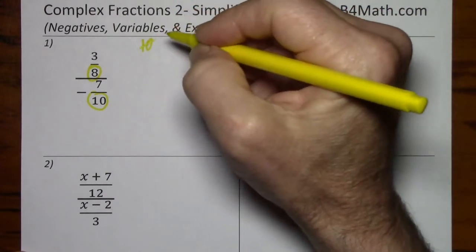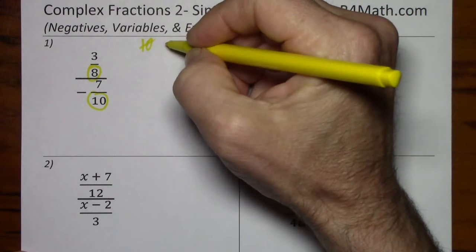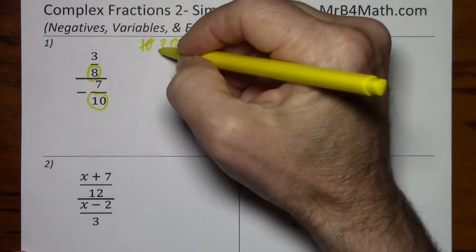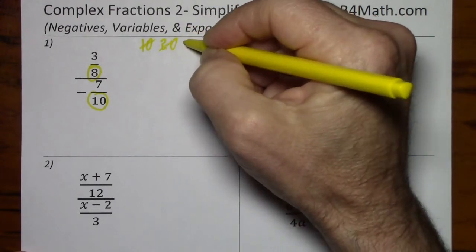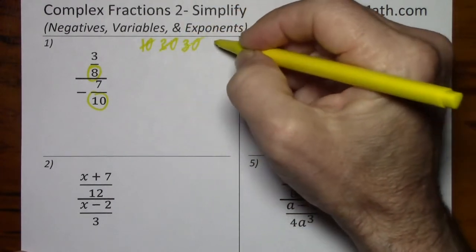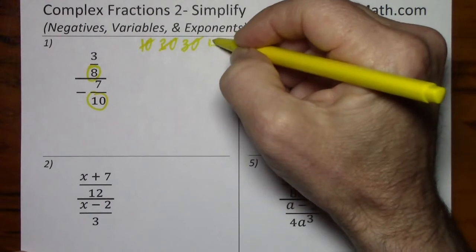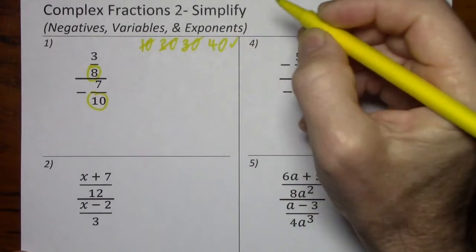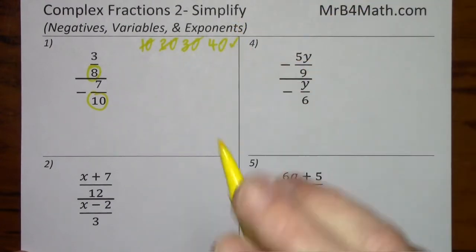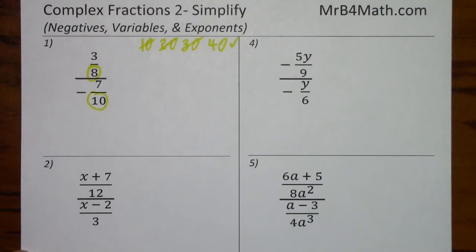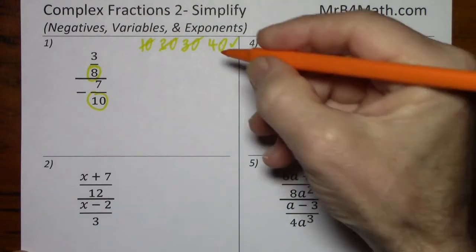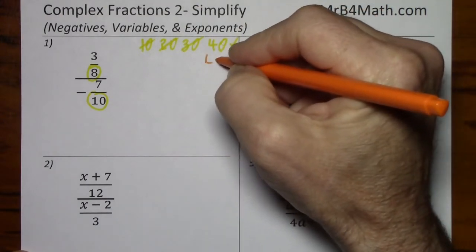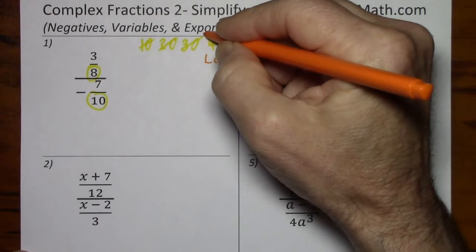10 doesn't work, because 8 won't fit into 10. Then we try 20, 30 — 40 works, because 8 goes into 40. So 40 is our least common denominator.